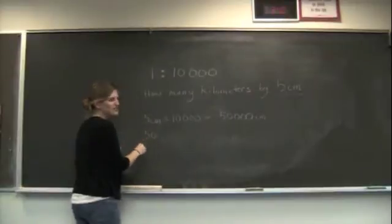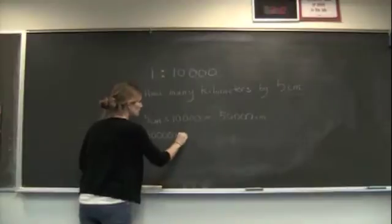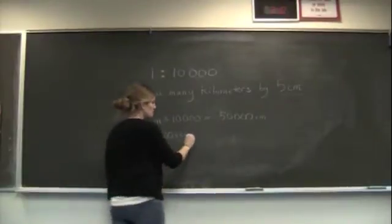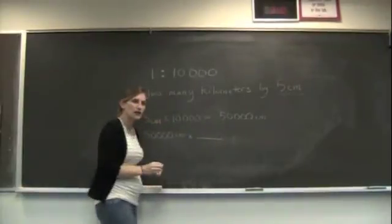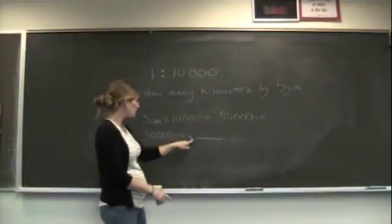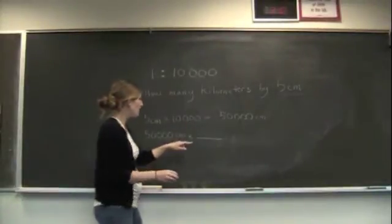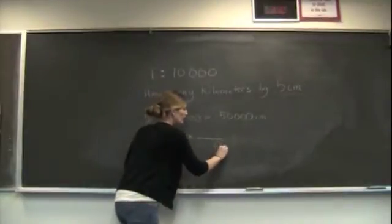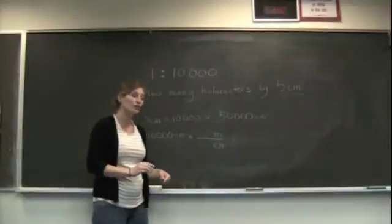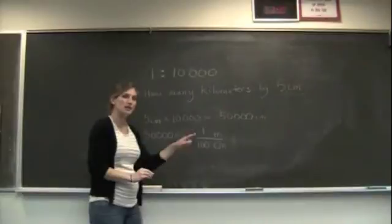We now are just going to continue to move this step by step. We have 50,000 centimeters, and to convert this into kilometers, we first have to convert it to meters. So we have centimeters on the top. I'm just going to set this up, multiplying it by some sort of fraction without panicking about it being a fraction. I'm going to put centimeters on the bottom and meters on the top. Centimeter means 100, so there are 100 centimeters for every 1 meter.